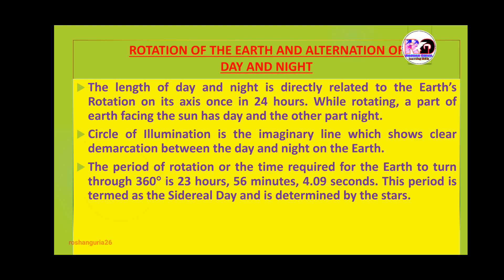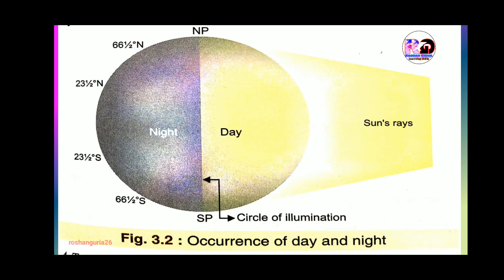The circle of illumination is the imaginary line which shows a clear demarcation between day and night on the earth. The period of rotation — the time required for the earth to turn through 360 degrees — is 23 hours 56 minutes and 4.09 seconds. This period is termed a sidereal day, determined by the stars. The side of the earth receiving the sun's rays is termed day, and the other side is night. The circle dividing day and night is known as the circle of illumination.